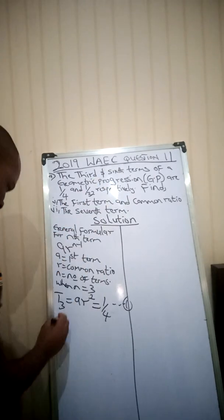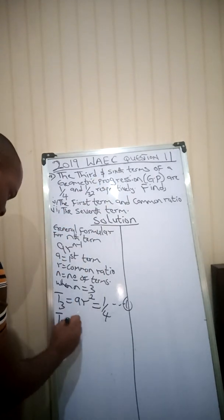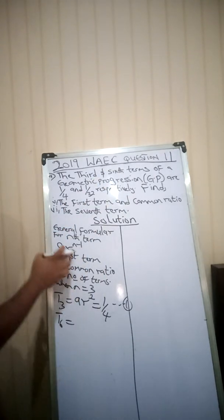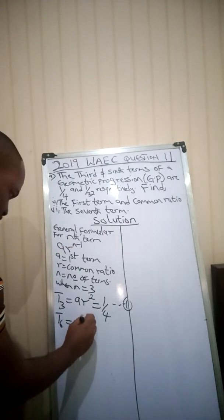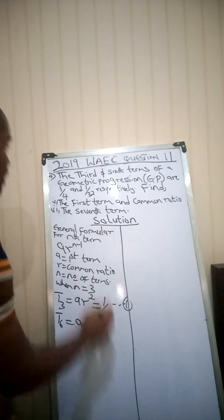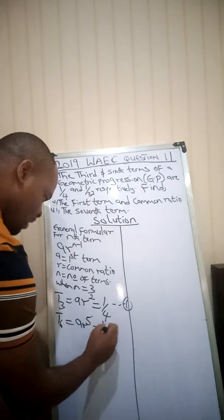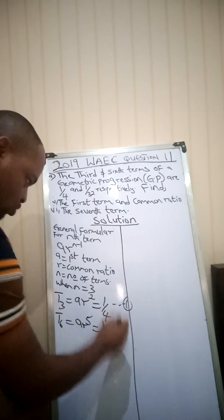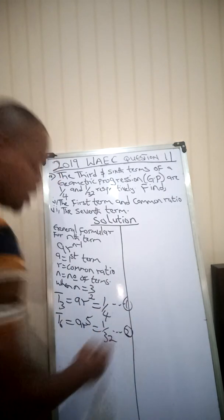The sixth term is T6. If we put n = 6, we get ar^(6-1) = ar⁵ = 1/32. That is equation 2.